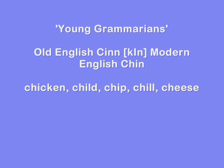So we also get chicken, child, chai, chip, chill, cheese, etc., all of which originally had a K sound at the beginning, meaning that the pronunciation before was 'kickin', 'kild', 'kip', 'kill', 'keys', etc.